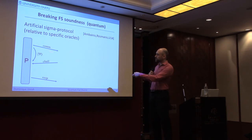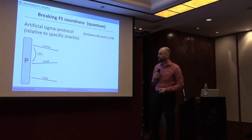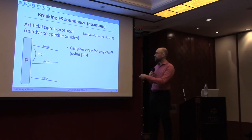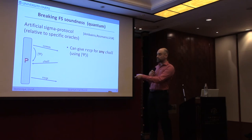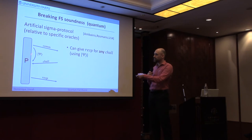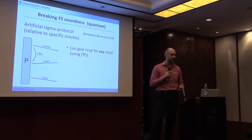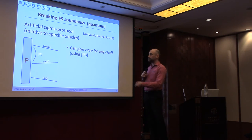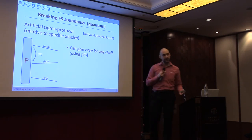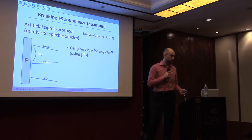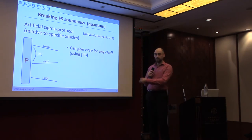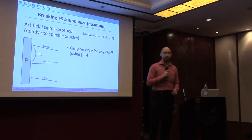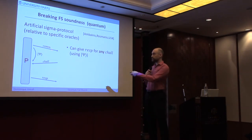We can construct a sigma protocol so that with some malicious prover, sending some commitment and generating at the same time a secret quantum state psi, the prover receives an arbitrary challenge and always gives a valid response — even if the statement being proved is wrong. If we have such a sigma protocol, obviously Fiat-Shamir will be insecure, because the Fiat-Shamir prover can also just produce a commitment, hash it, get a challenge, and get a response for that.